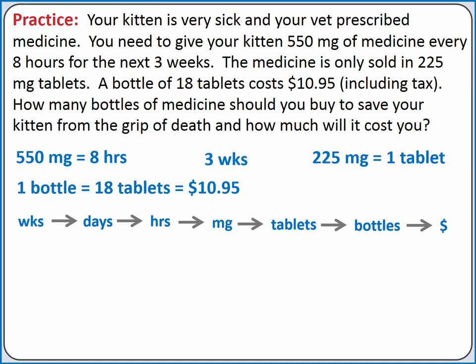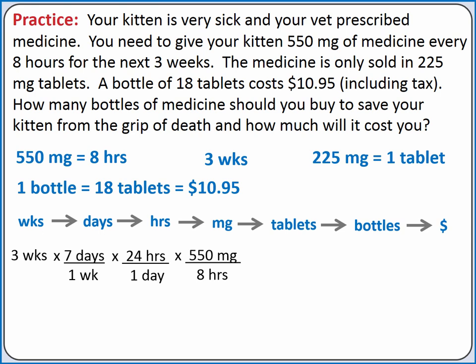Next, let's add numbers. We'll start with 3 weeks. Since weeks are on top, we'll multiply by 7 days divided by 1 week — putting weeks in the denominator allows weeks to cancel and we're left with days. Then we can convert days to hours by multiplying by 24 hours divided by 1 day. Now that we're in hours, we can multiply by 550 milligrams of medicine per 8 hours and we'll be left with milligrams.